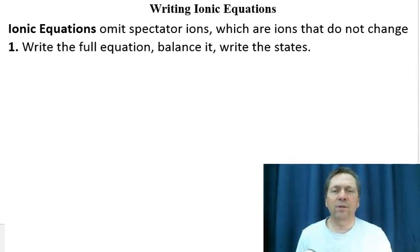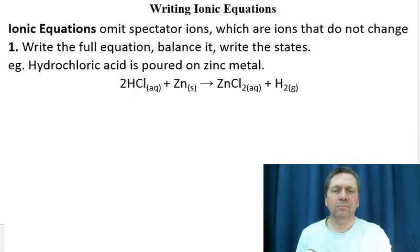The first step is to write the full equation, balance it, and write the states. If we had some hydrochloric acid and poured it on zinc metal, there would be a reaction, and the product is zinc chloride solution and hydrogen gas. The metal dissolves away.